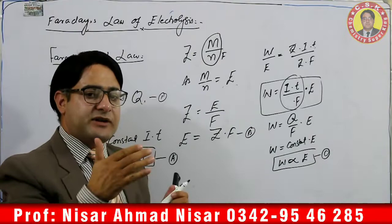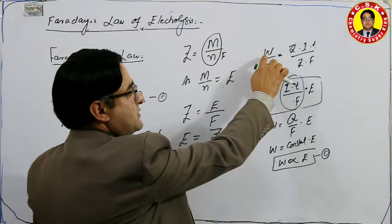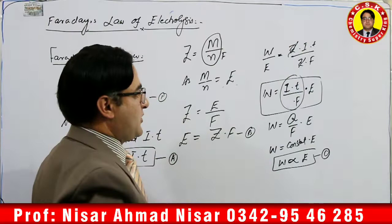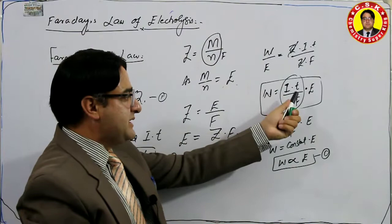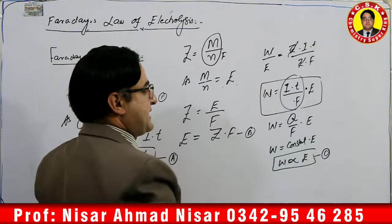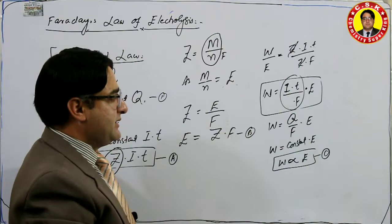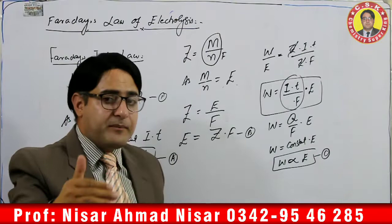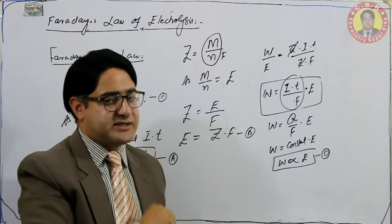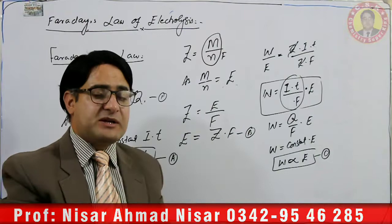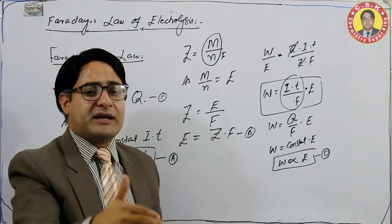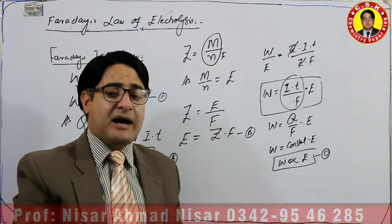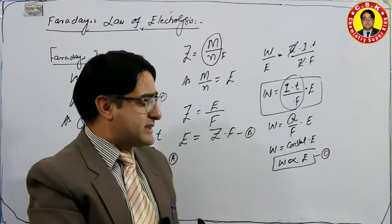Dividing left-hand side by left-hand side and right-hand side by right-hand side: W / E = (Z·I·T) / (Z·F). The Z cancels, giving W = (I·T / F) × E. Since I × T is the quantity of electricity Q, we can write W = (Q/F) × E. If the amount of electricity passed during electrolysis is kept constant, then the substance deposited or liberated is directly proportional to the chemical equivalent of that substance.